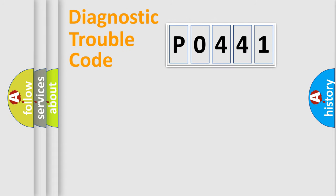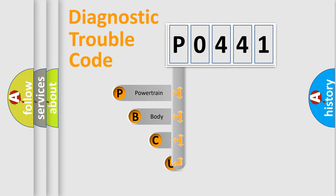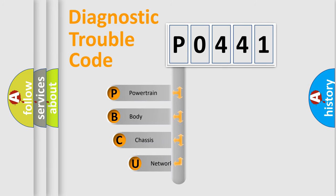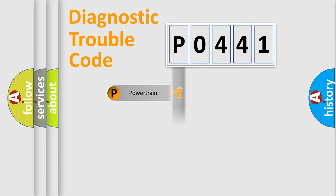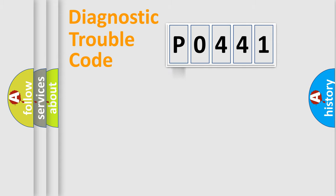Let's do this. First, let's look at the history of diagnostic fault code composition according to the OBD2 protocol, which is unified for all automakers since 2000. We divide the electric system of an automobile into four basic units: Powertrain, Body, Chassis, and Network.